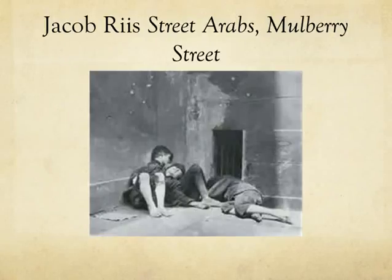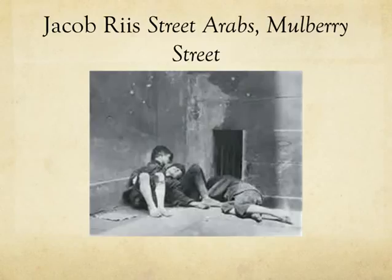Street Arabs were homeless children who slept in alleyways. This stunning photograph called Street Arabs, Mulberry Street by Jacob Riis showed the anguish of these young boys and their traveling, impoverished lifestyle. At this time, artists started desiring to create not only beautiful imagery but also images that revolutionized life. They wanted to show poverty in the face of the middle class and upscale society.